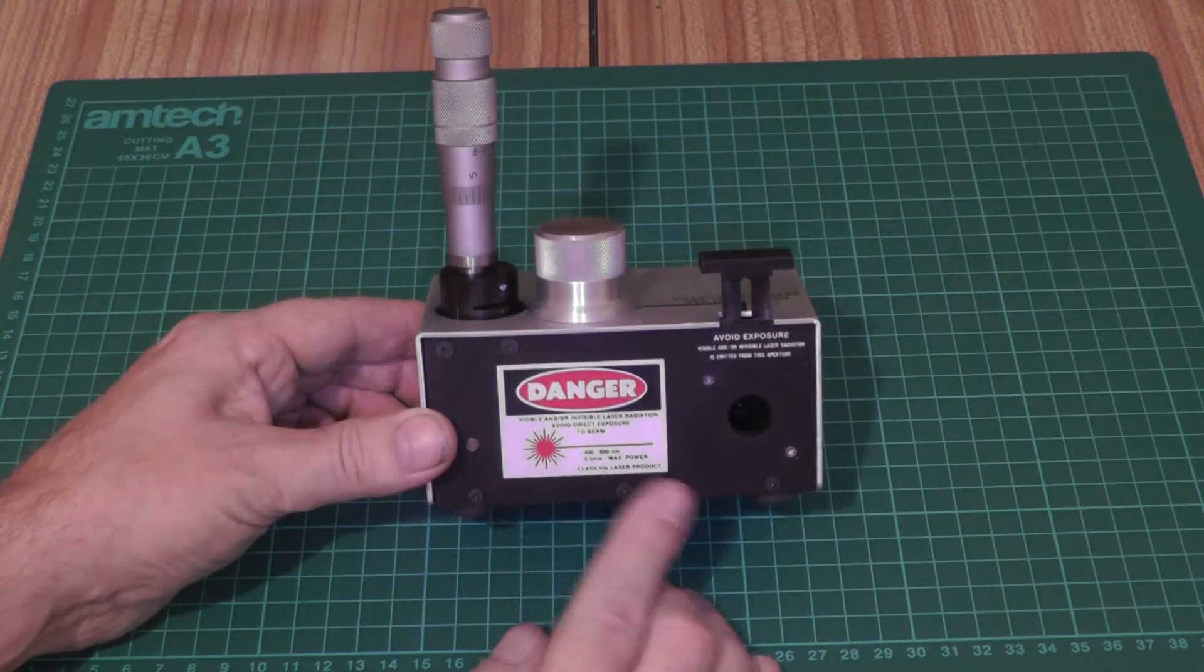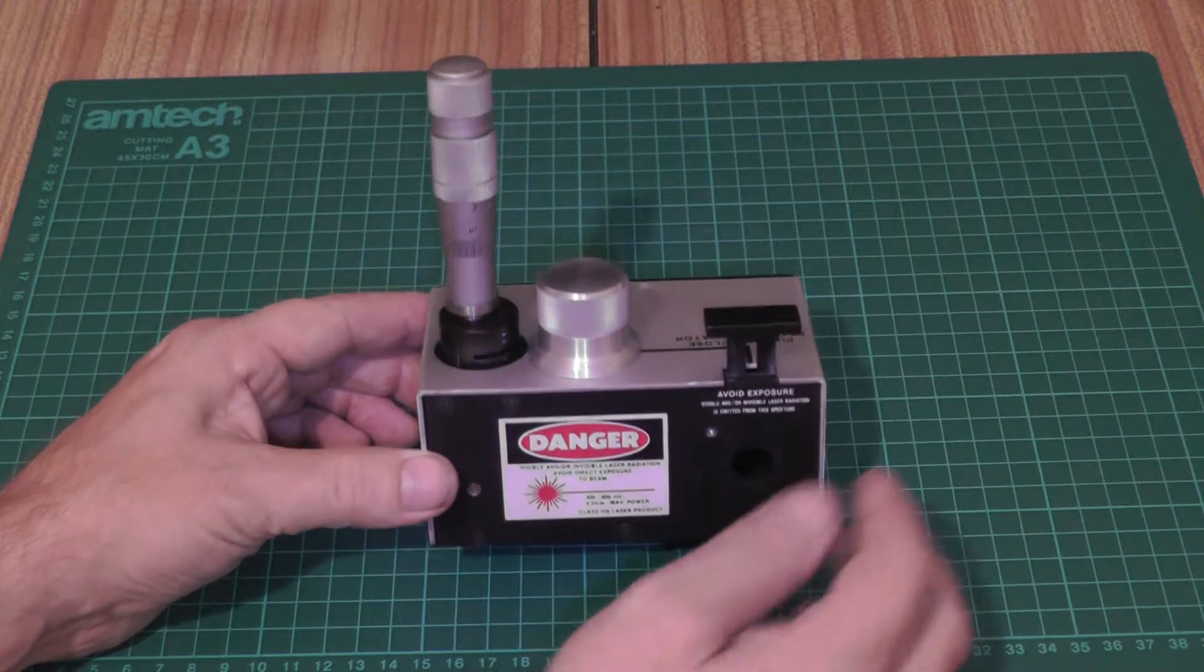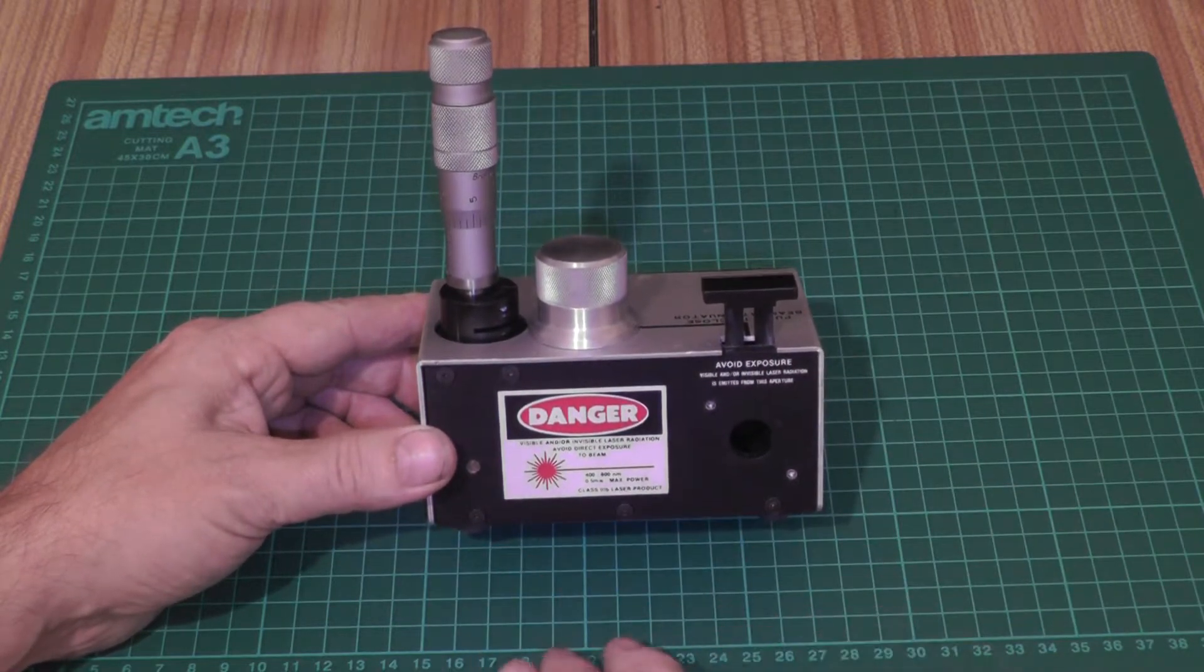We've got a nice warning label on the front and it states 400 to 800 nanometers, half milliwatt max, class 3B because peak power is very, very high.